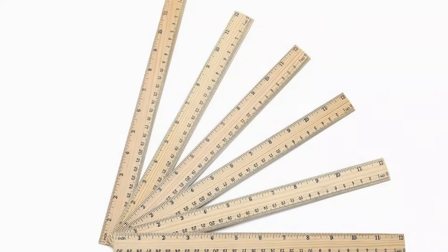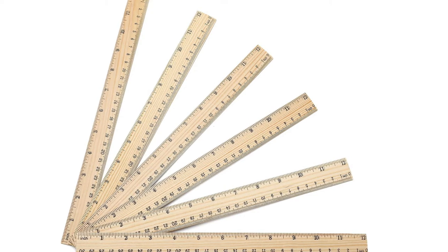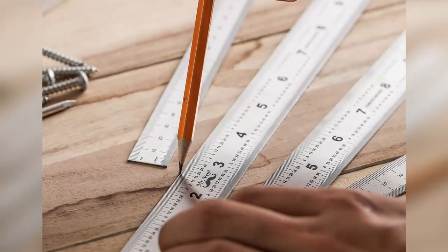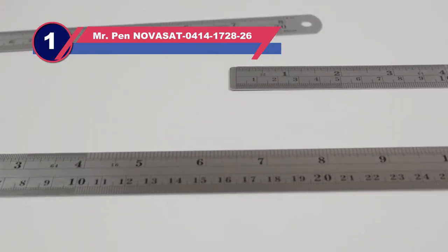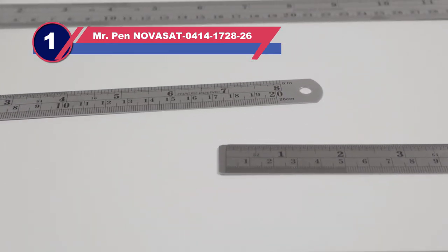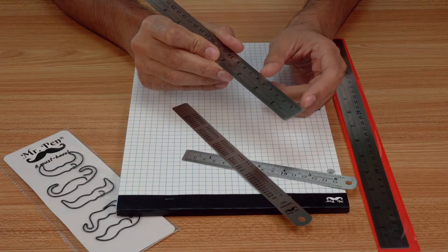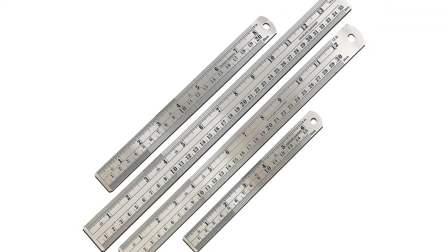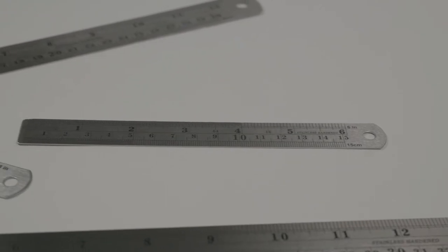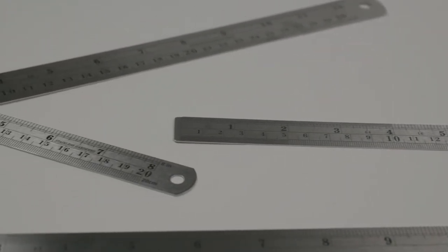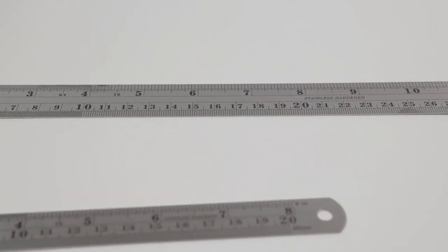Number one: Mr. Pen Novasat 0414172826 ruler. If you're looking for the best steel ruler, you'll be pleased with this offering. It's a set of four rulers in different sizes including 14 inches, 12 inches, 8 inches, and 6 inches. The rulers are otherwise identical with inch measurements going down to 1/64th of an inch and the metric measurements going down to 1/20th of a centimeter. Each ruler is made from high-impact stainless steel that measures 1/32nd of an inch thick.